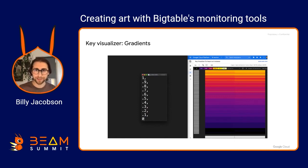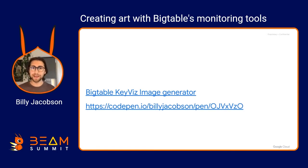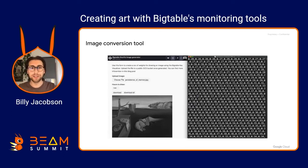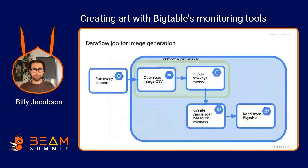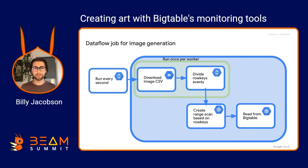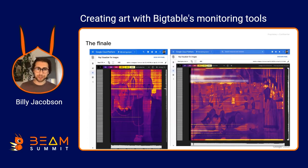Now I had all the tools. I wrote up a CodePen in JavaScript that would take an image and convert it into one of those CSV files. You just upload an image and specify how many hours you wanted to draw based on the 15-minute intervals. Then I made my final pipeline: every second using generate sequence, it downloads the image CSV stored in Google Cloud Storage, divides the row keys evenly based on that, applies a similar concept to the abstract Bigtable do function — storing the data once per worker so we don't keep re-downloading it — then creates a scan based on the range of row keys and reads from Bigtable.